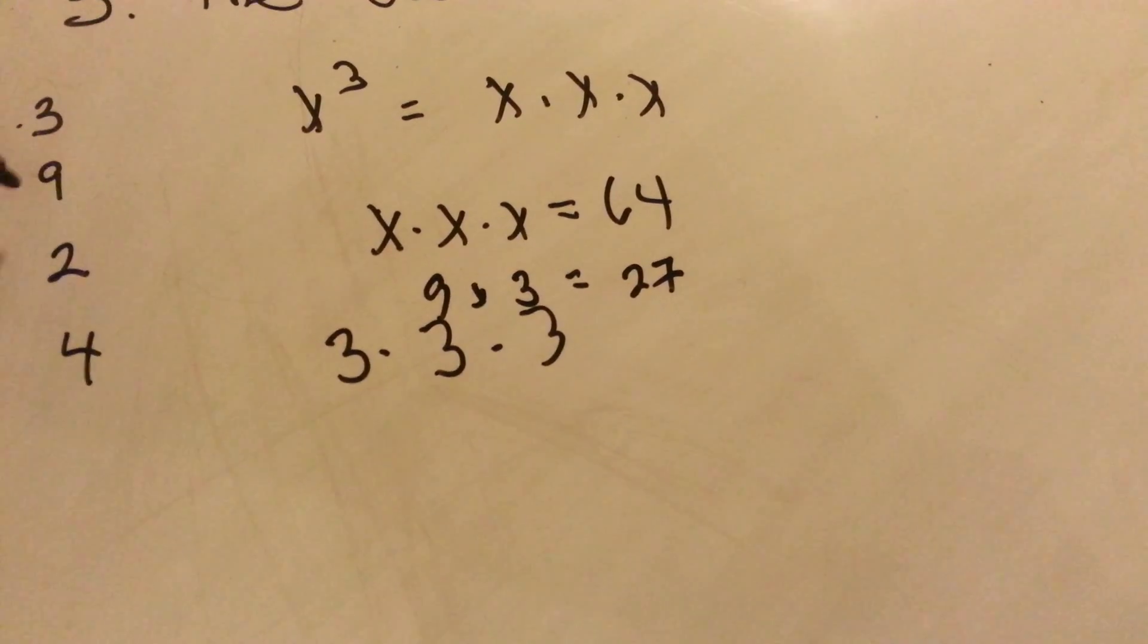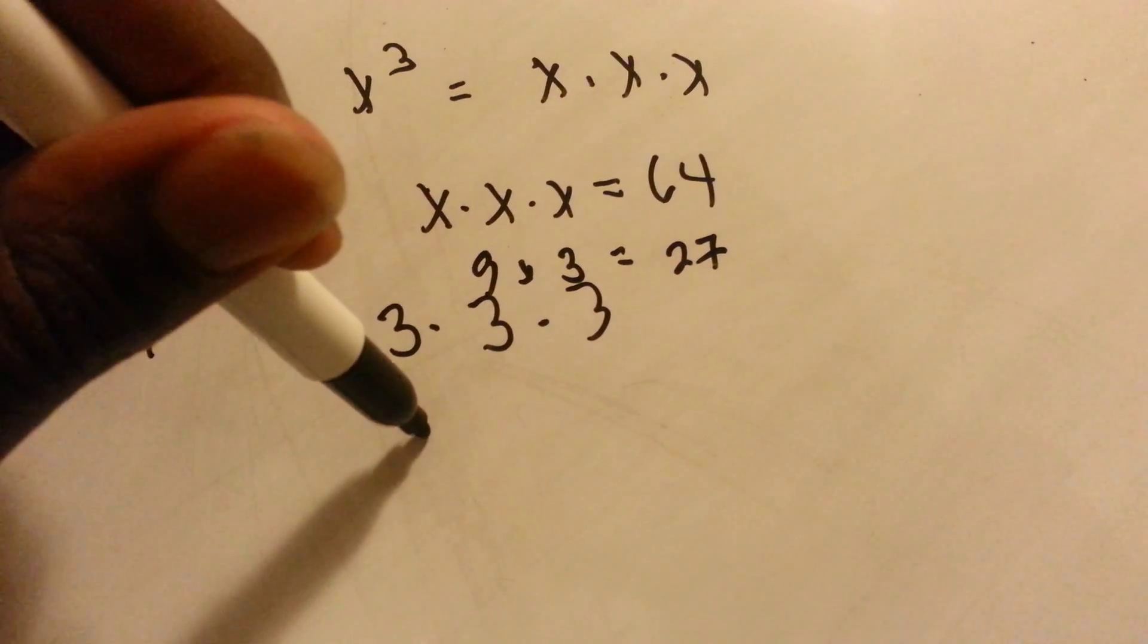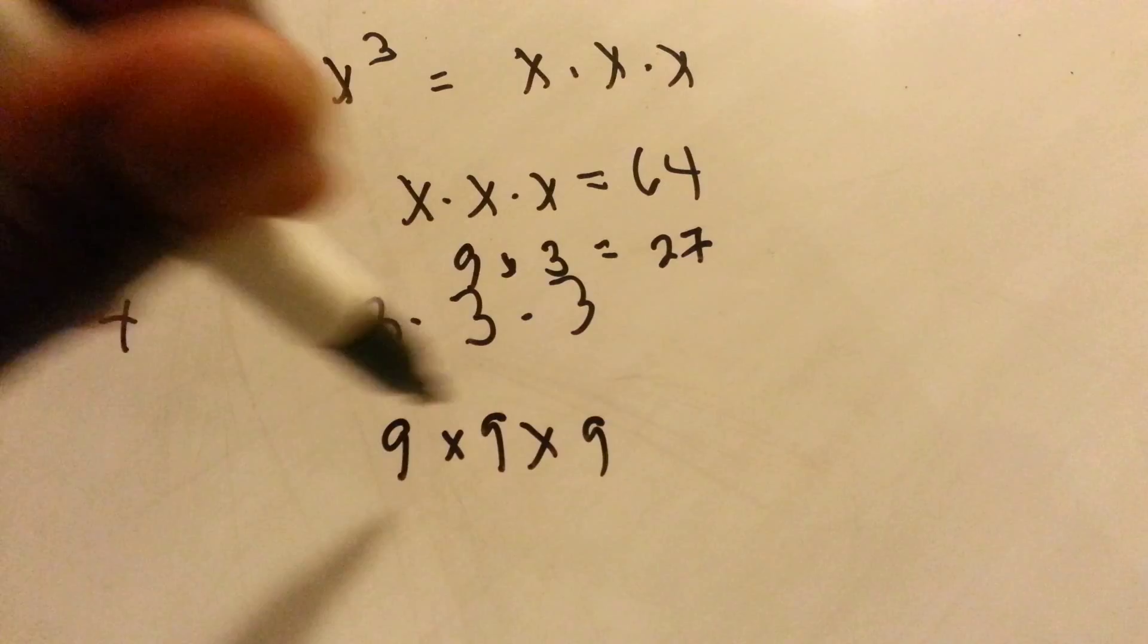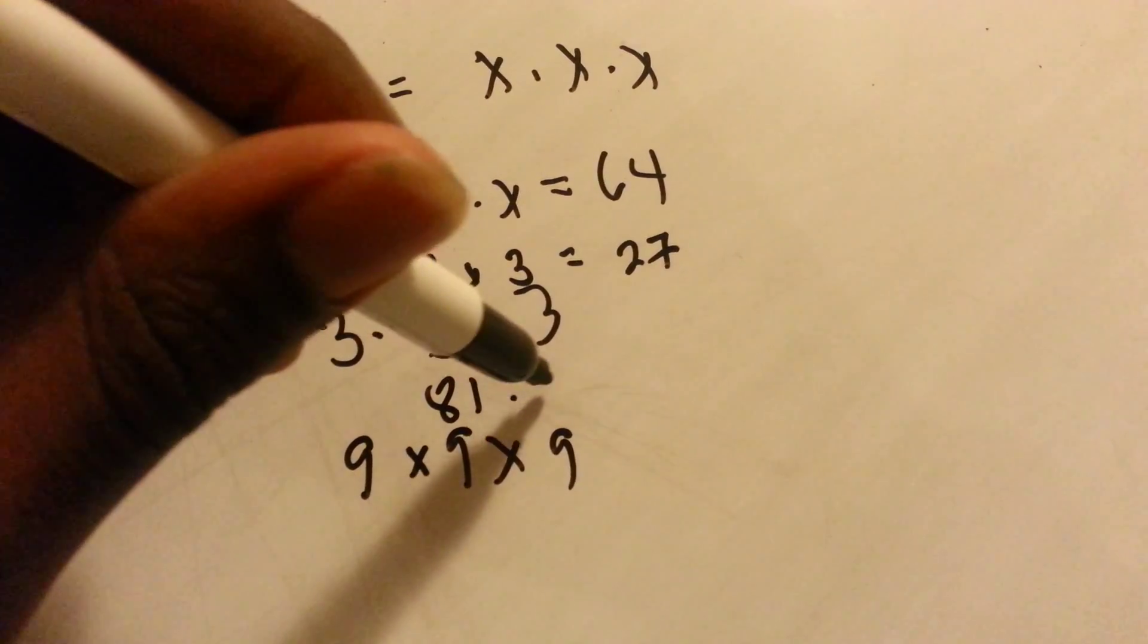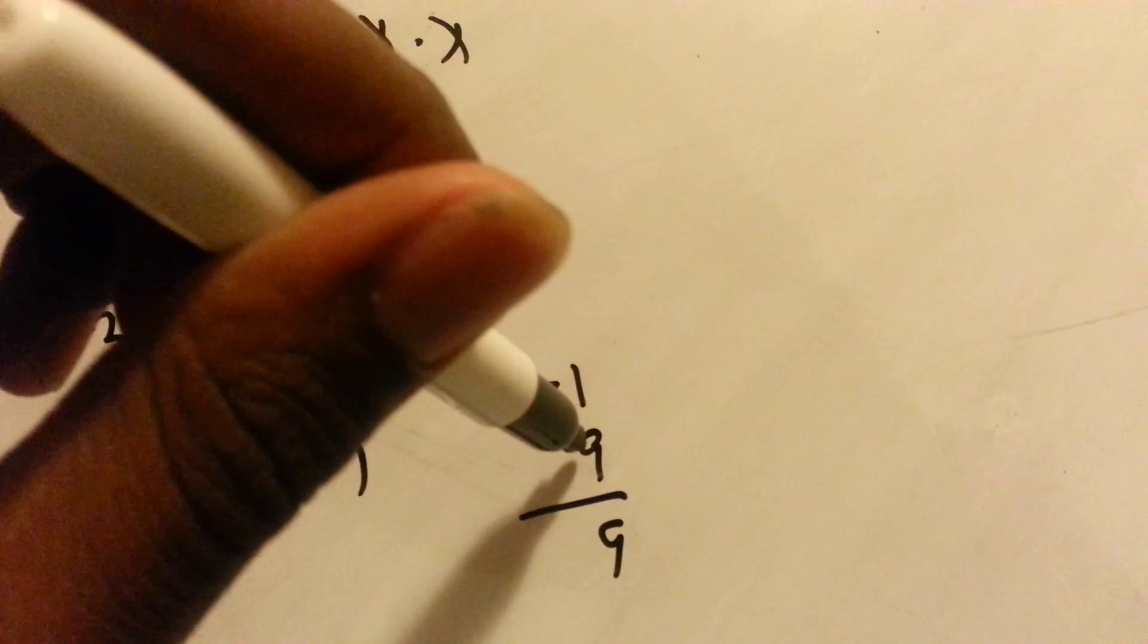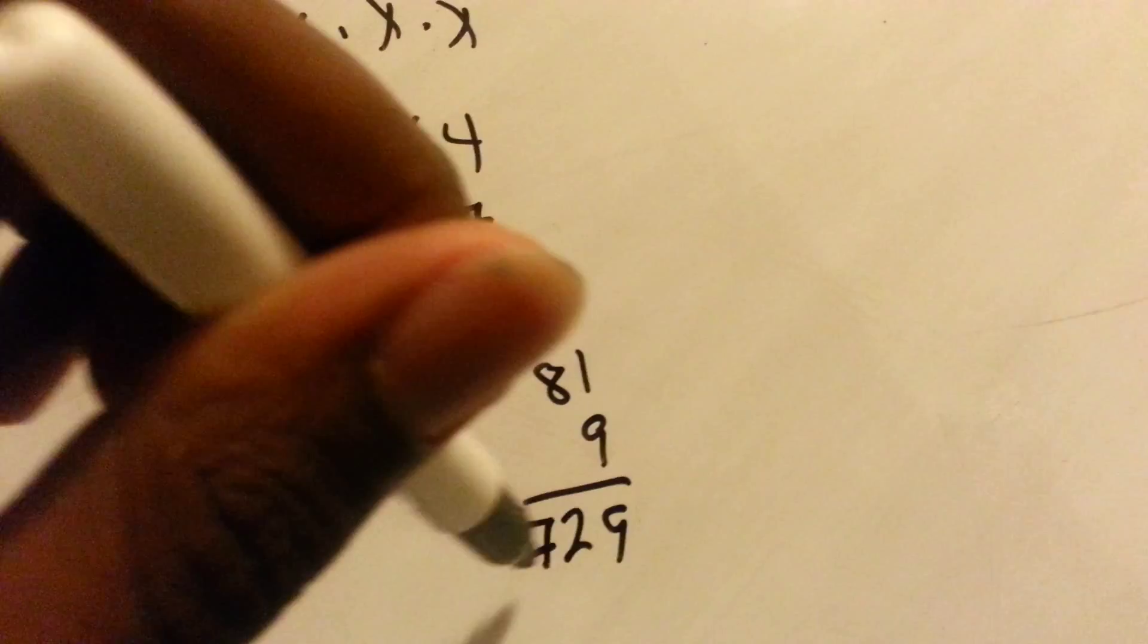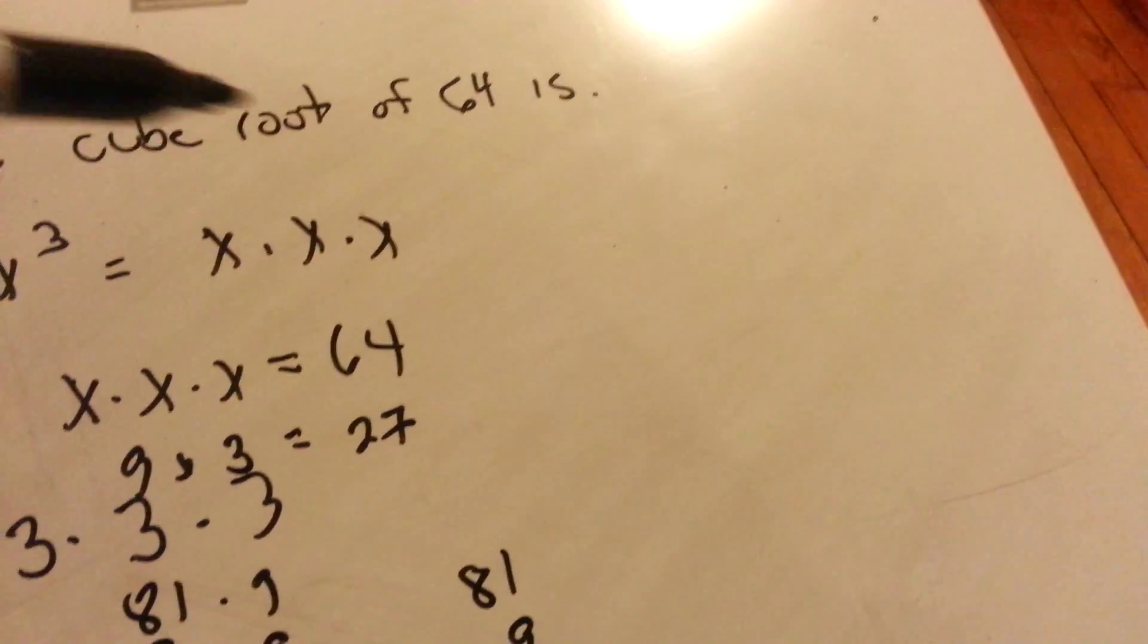I can tell you that nine is going to be too much. We can try it out anyway. Nine times nine times nine. Nine times nine is 81. 81 times nine, we'll do it over here. Nine times one is nine. Nine times eight is 72. So that's 729. That's too much. We're looking for 64.